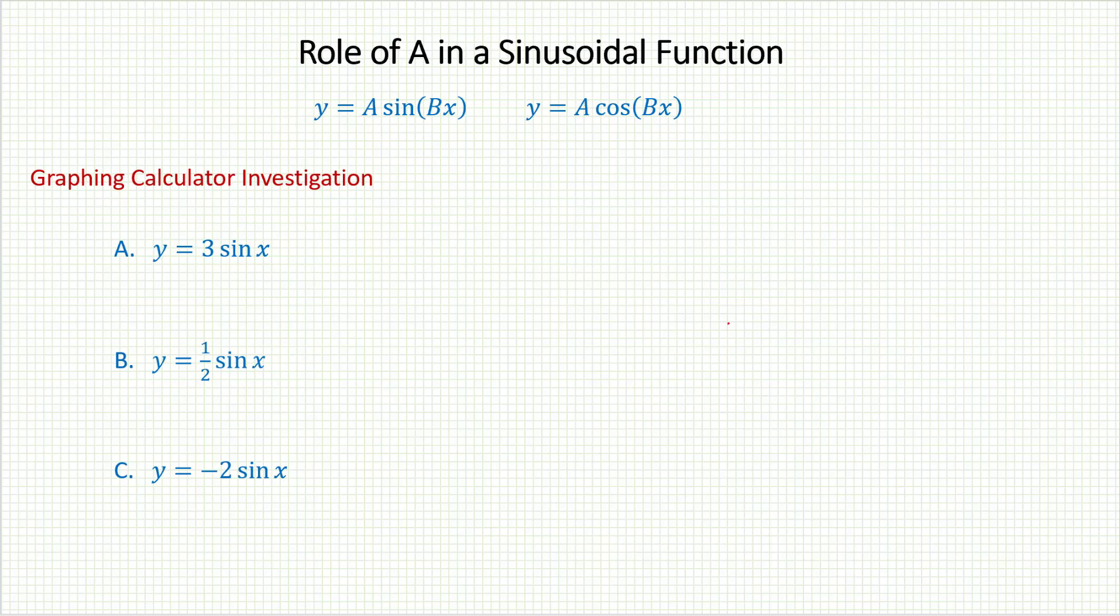Role of A in a sinusoidal function. So we know the basic shapes of the sine and cosine graphs. What happens, though, if we put in a multiplying number, which we are calling A, in front of either our sine or cosine equation?